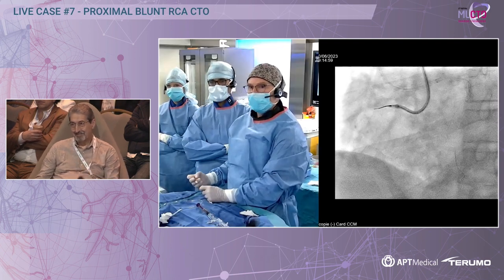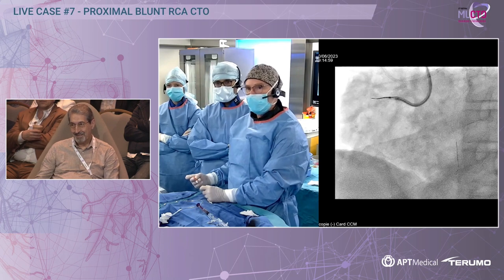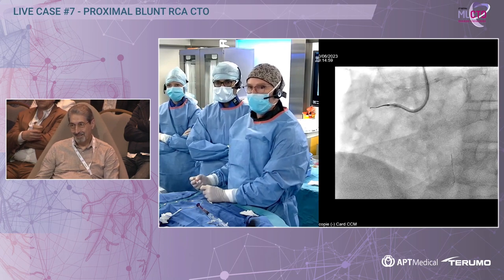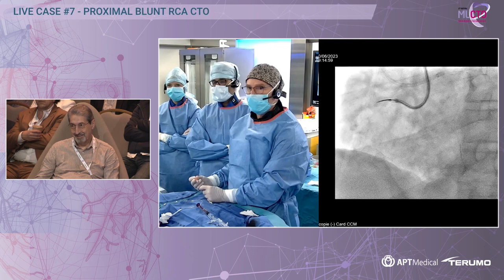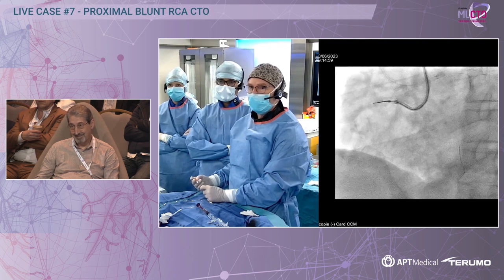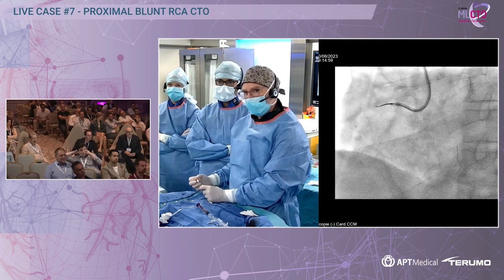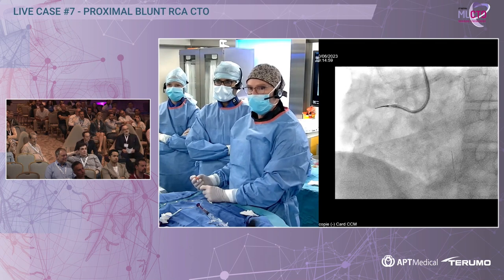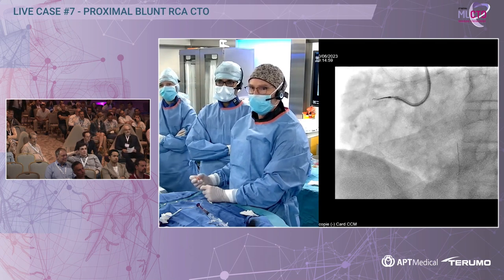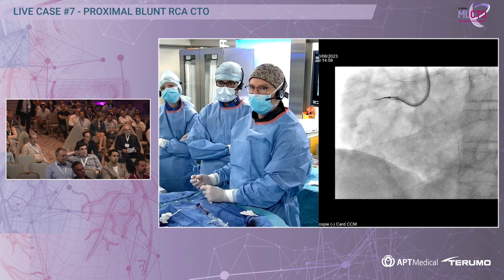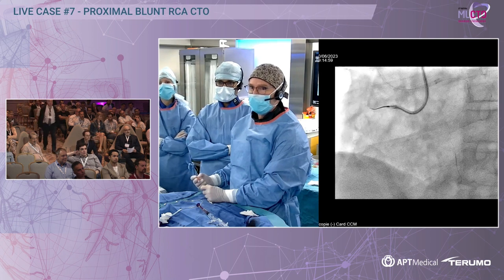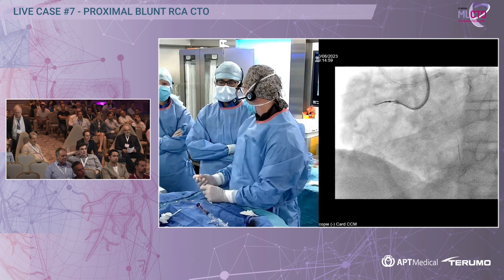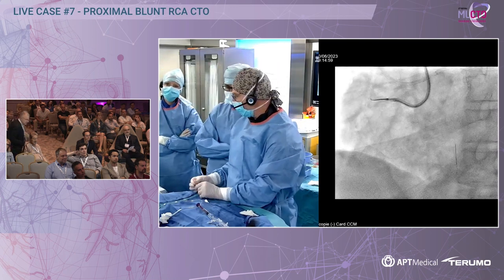You can see how the tip of the Gaia reacts — it wants to knuckle. It's hitting something hard. I'm trying to direct it inside but it's very difficult. So I think in that case a polymer-jacketed wire will be my choice now. If you agree, we'll take a Gladius.